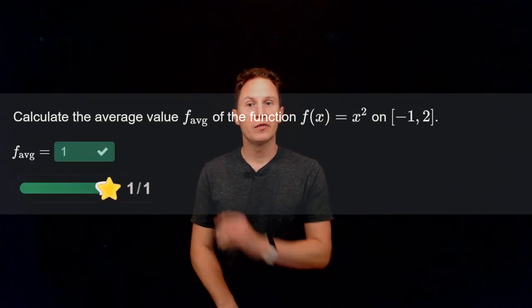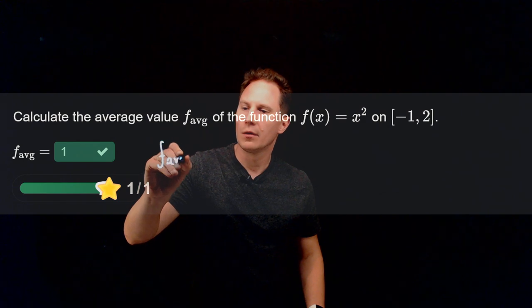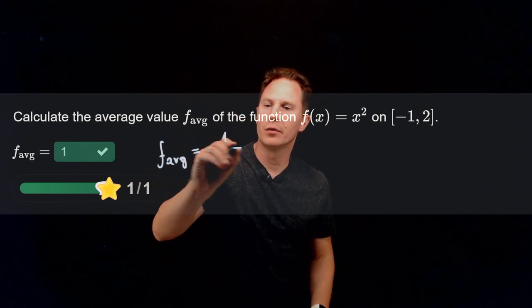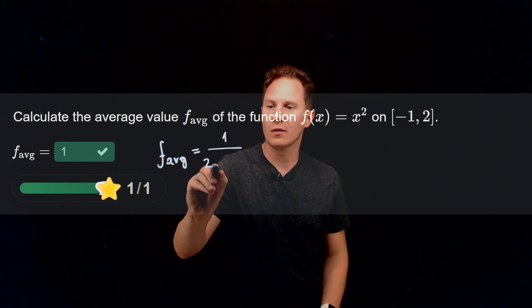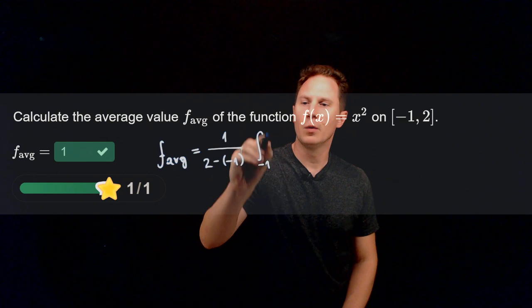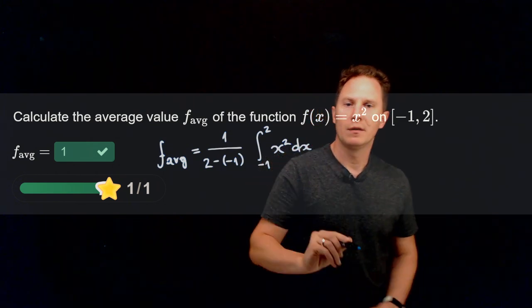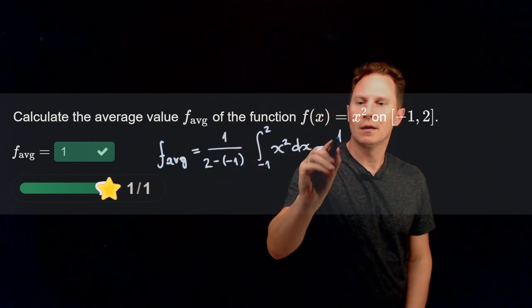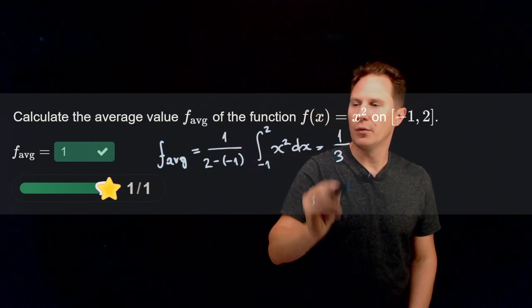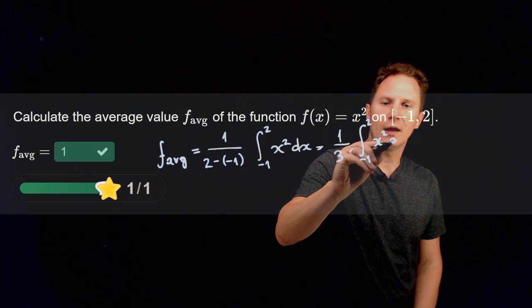Hope you paused it, and I found this average to be 1. So to find this average value we need to take 1 over b minus a, which in this case is 2 minus negative 1, times the integral from negative 1 to 2 of the function x squared dx. Now the fraction there is one third times the integral from negative 1 to 2 of x squared dx.